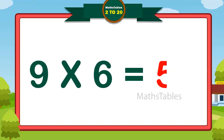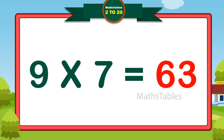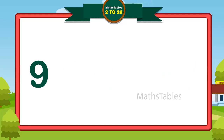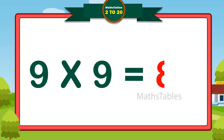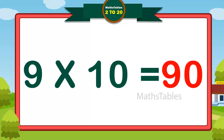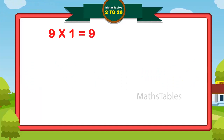9 sixes are 54. 9 sevens are 63. 9 eights are 72. 9 nines are 81. 9 tens are 90.